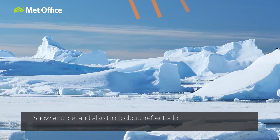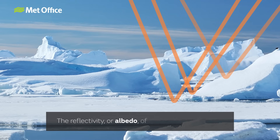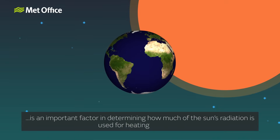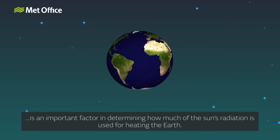Snow and ice and also thick cloud reflect a lot of the Sun's radiation back into space. The reflectivity or albedo of the underlying surface is an important factor in determining how much of the Sun's radiation is used for heating the Earth.